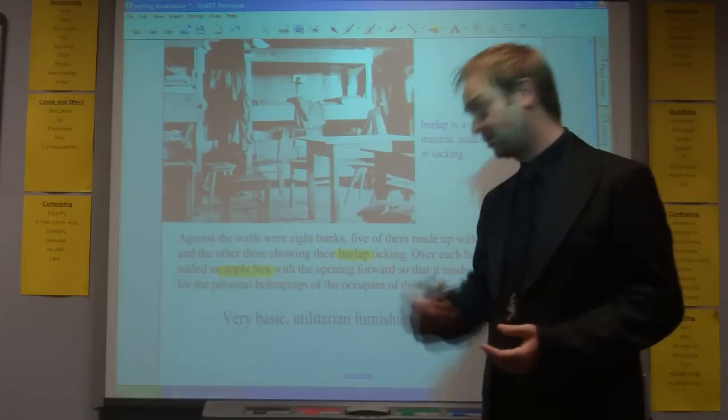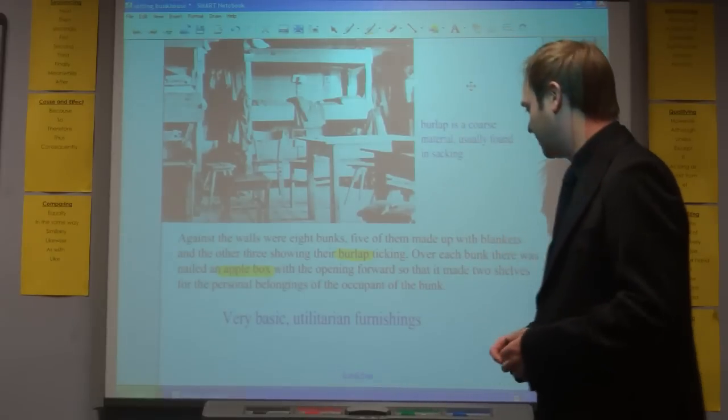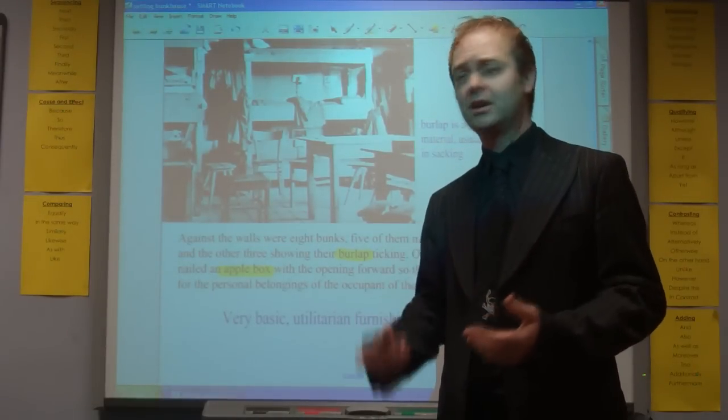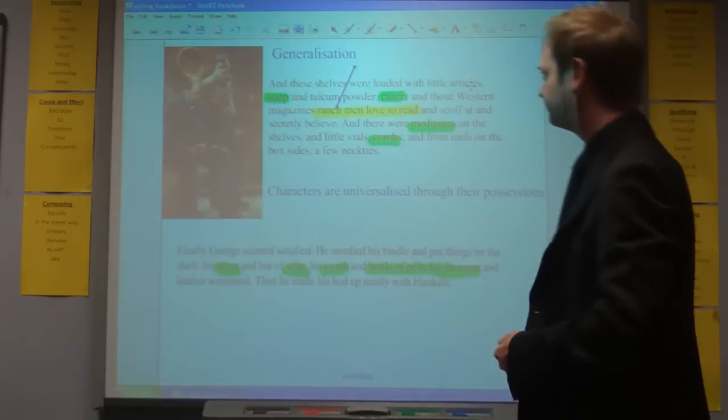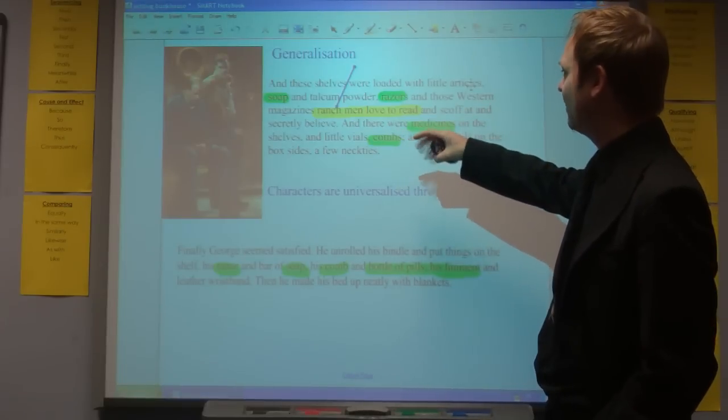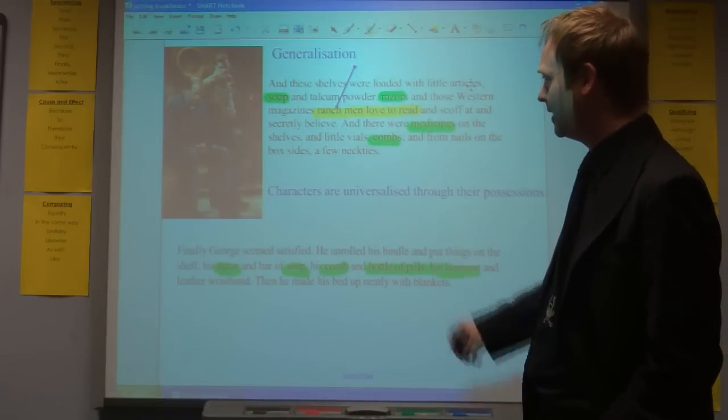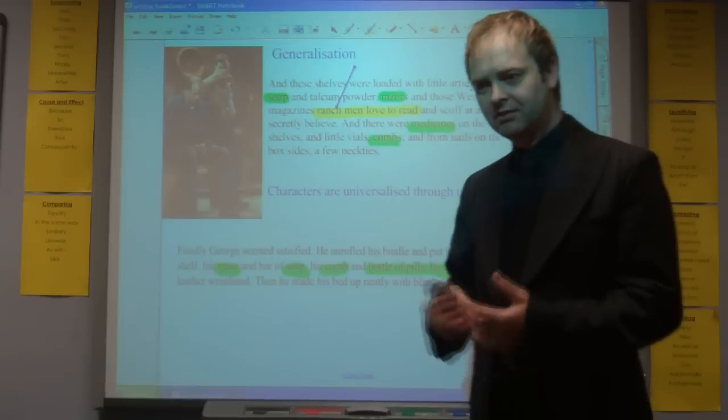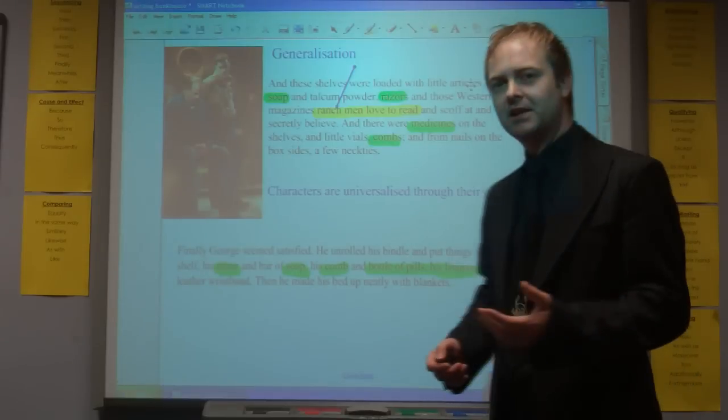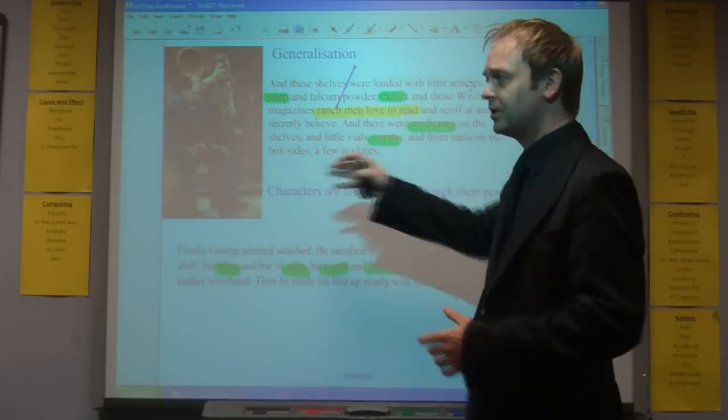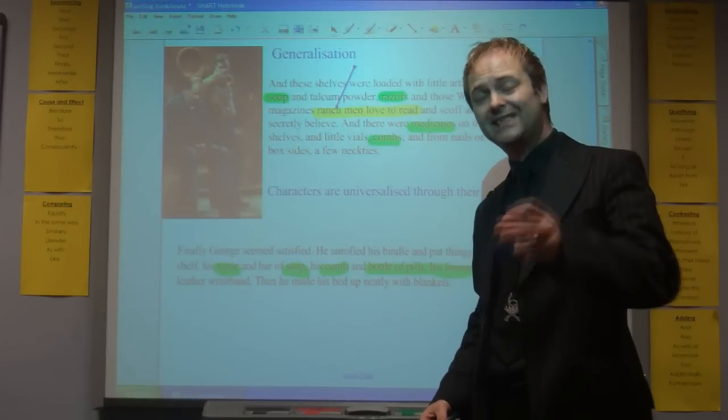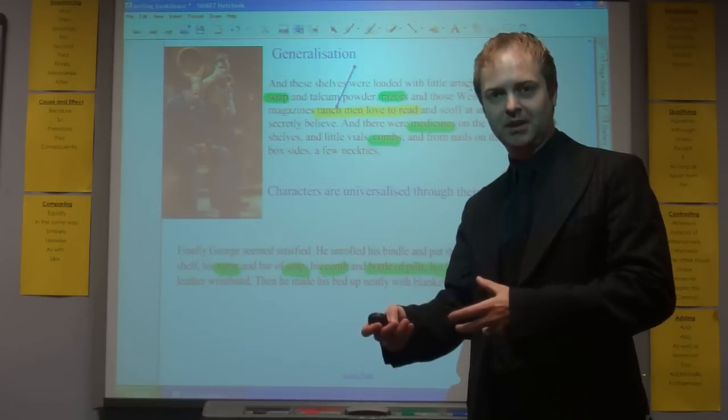Over each bunk there was nailed an apple box. Here's an example of that found furniture. With the opening forward so they've made two shelves for the personal belongings of the occupant of the bunk. So it's very basic, very utilitarian, it's of the ranch. These shelves were loaded with little articles: soap and talcum powder, razors, and those western magazines ranchmen love to read and scoff at and secretly believe. Notice that the ranchmen are generalised there. It's this sense of generalisation and uniformity being stressed by Steinbeck. These people are all the same.